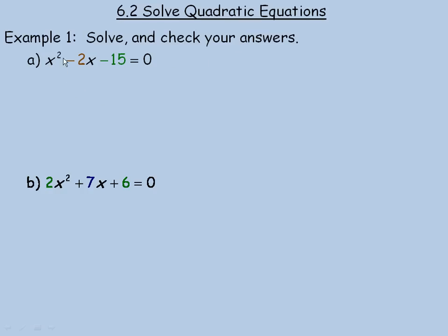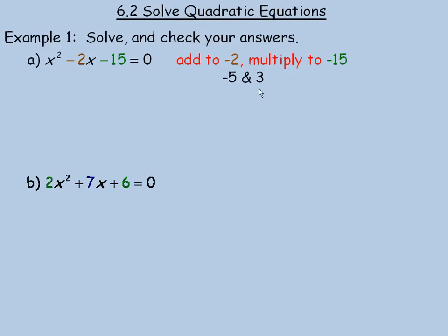In order to solve x squared minus 2x minus 15 equals 0, we are going to factor x squared minus 2x minus 15. We look for two numbers that add to negative 2 and that multiply to negative 15. Those numbers are negative 5 and 3. Negative 5 and 3 add to negative 2, the coefficient of the x term, and they multiply to negative 15, the constant.